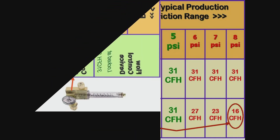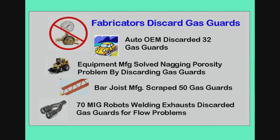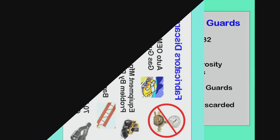A number of fabricators complained about the low-pressure Surge Guard device. We tested one — 32 systems were discarded because of varying flow. Another found that removing them solved a nagging porosity problem. Another discarded 50 because of unhappy welders. Now we know why they were unhappy. Another OEM exhaust manufacturer discarded 70 low-pressure systems because of flow variations.